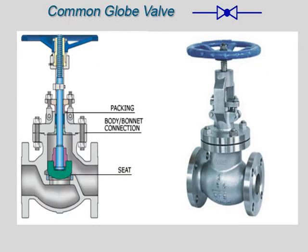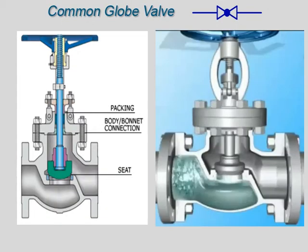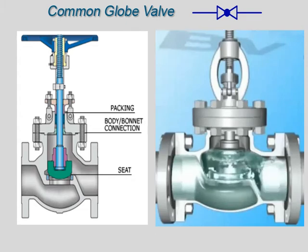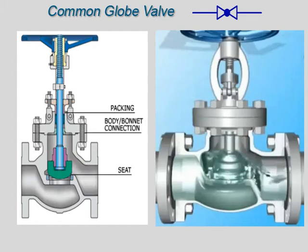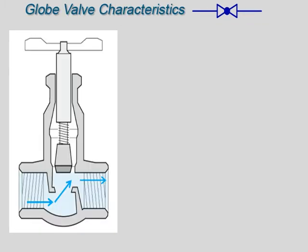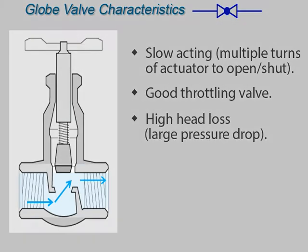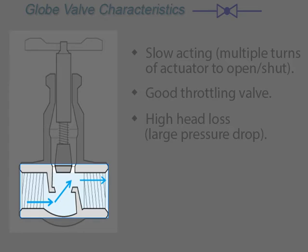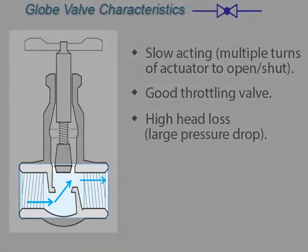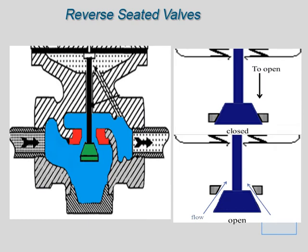Globe valves are the most widely used flow regulating valves. They are linear motion valves with excellent flow isolation and throttling characteristics. The essential principle of globe valve operation is the perpendicular movement of the disc away from the seat. The globe valve is slow-acting due to multiple turns of the actuator to fully open or shut the valve. The main advantage is good throttling characteristic. The disadvantage is the large amount of head loss that occurs across the valve due to flow direction changes and small openings in the seat. Globe valves can be designed so that the disc closes against or in the same direction of fluid flow. Valves that open in the direction of flow are normal seated or forward seated; valves that open against the flow are reverse seated. Manually operated valves are typically normal seated, while reverse seated valves are typically used with non-manual actuators for throttling purposes.